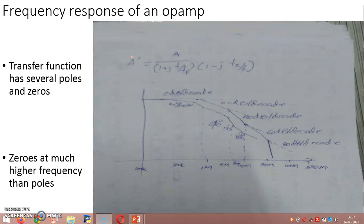The effect of these poles and zeros will come into the transfer function of the IC op-amp. There are a large number of poles as well as zeros in the transfer function of an IC operational amplifier. One important observation is that the zeros occurring in the transfer function of the op-amp are at extremely large frequencies compared with the poles. So at practical frequencies, we only need to consider the effect of poles, since zeros are found to occur at very large frequencies of the order of greater than 500 megahertz.